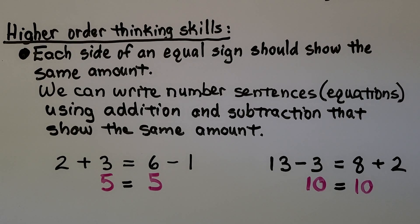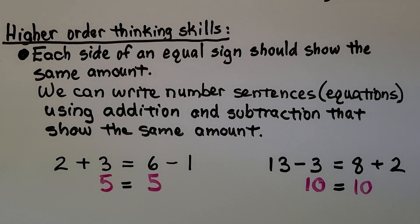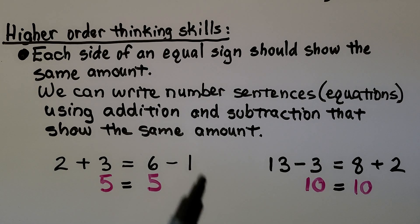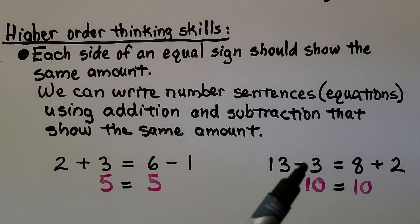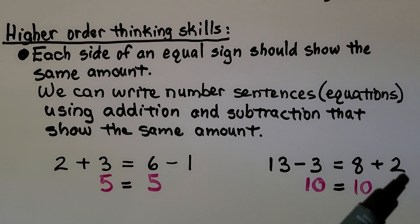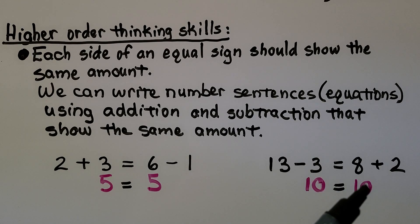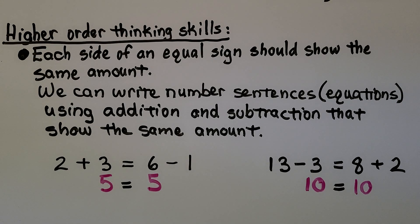Let's try some higher-order thinking skills. Each side of an equal sign should show the same amount. We can write number sentences — equations — using addition and subtraction that show the same amount. For example, 2 plus 3 is equal to 6 minus 1, because both equal 5. Also, 13 minus 3 is equal to 8 plus 2, because both equal 10. We can write number sentences using addition and subtraction that show the same amount.